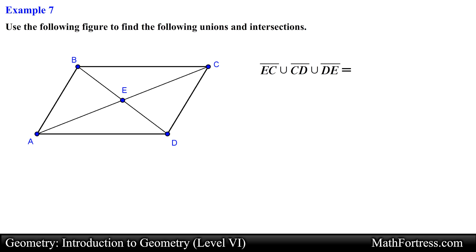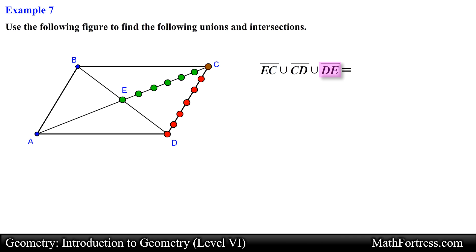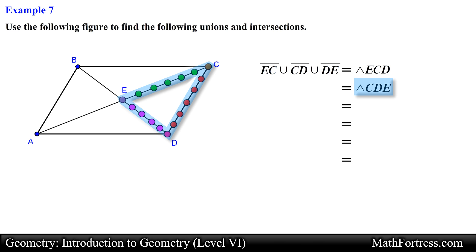Here we need to find the union of line segment EC, line segment CD, and line segment DE. Notice that we have three distinct sets; the concepts and ideas are the same regardless of the number of sets. The set of all points for line segment EC, line segment CD, and line segment DE are each shown in the figure. Since we are finding the union of all these points, merging them together creates a new set of points that represents a triangle — specifically triangle ECD, which can also be written as triangle CDE, triangle DEC, triangle DCE, triangle CED, or triangle EDC.